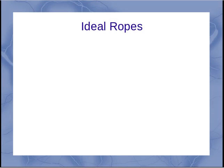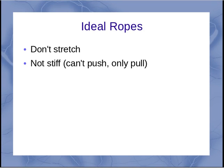So if I've got an ideal rope, and that's what we use most of the time in general physics, it doesn't stretch. It's also not stiff. That means you can't push on the rope and get the object to move. So you can only pull on the rope to get the object to move.